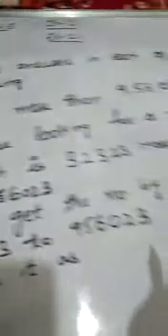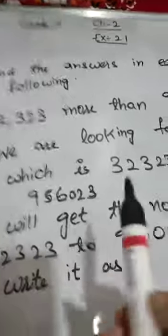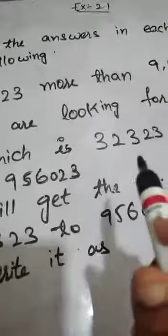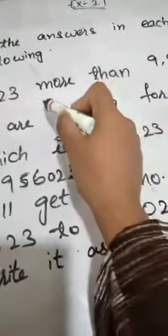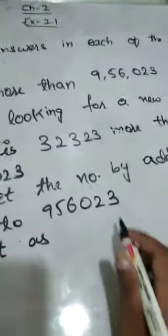So we will get the number by adding these 2. What does more than mean? I said addition has so many names. So more also comes in that only. So more than means we have to add these 2 numbers.